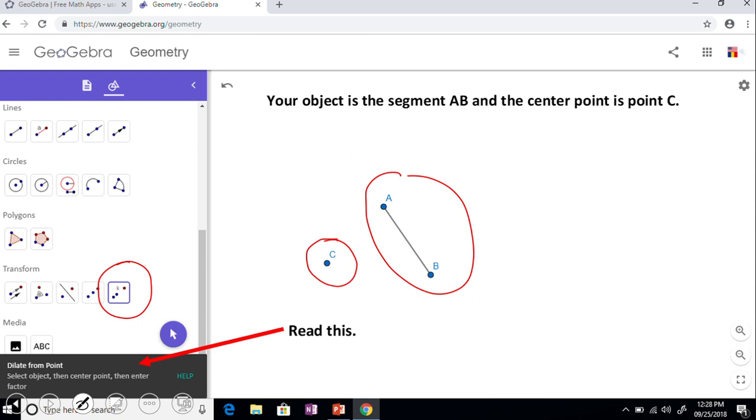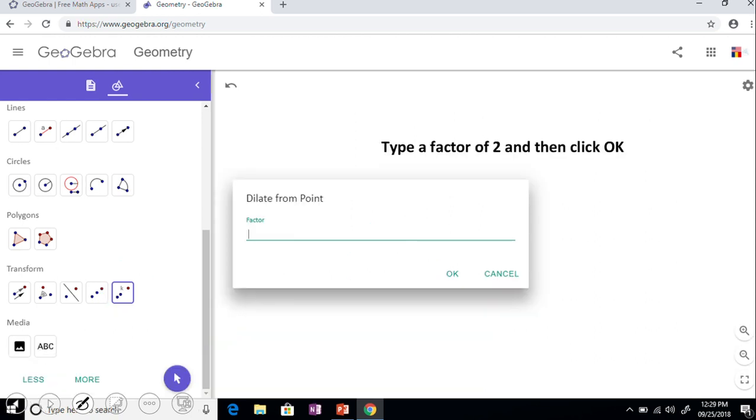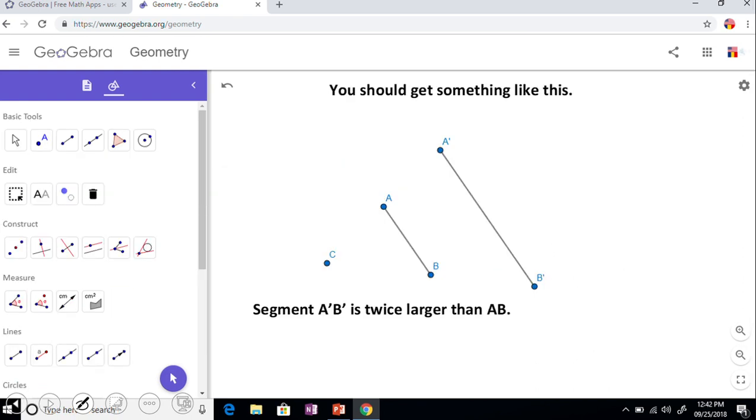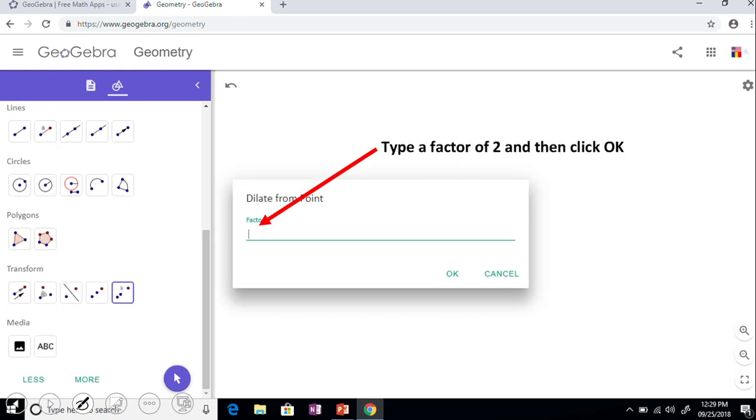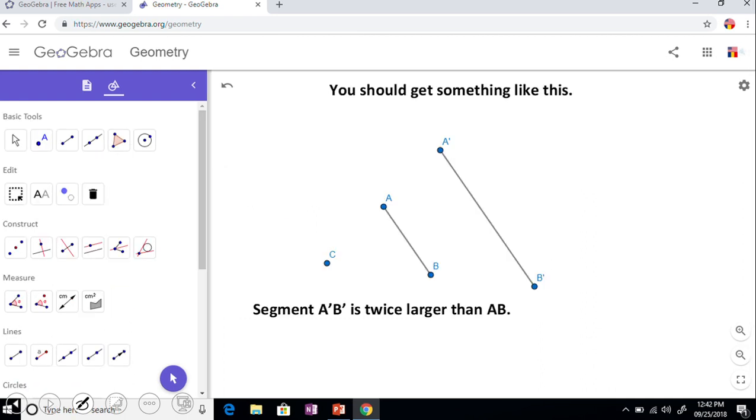And then you're going to get this message: dilate from a point. And depends on what you put there, I think I put a factor of two, you get a picture similar of mine. So yes, this is a factor of two. If you take a look, A prime B prime is twice larger than AB. If you obviously change the scale factor, you're going to get a different picture.